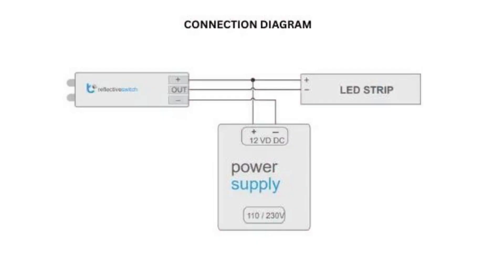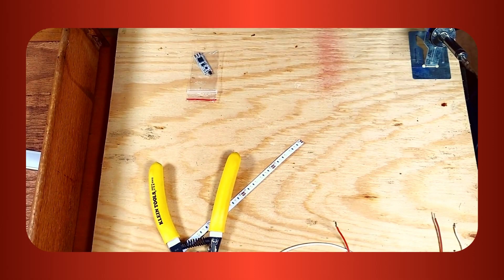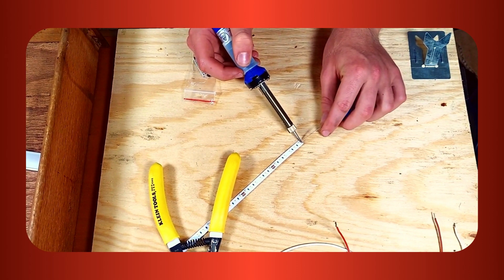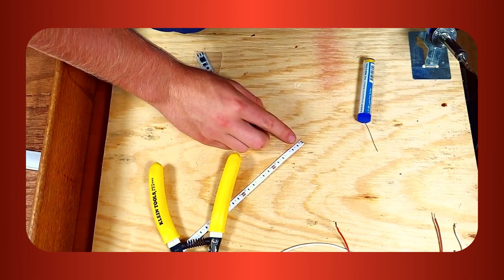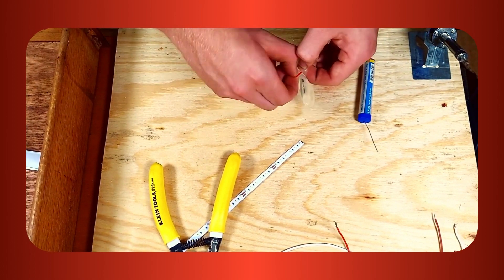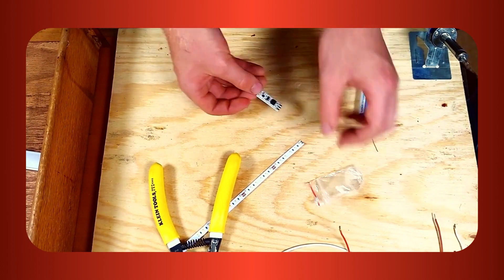it's time to solder. We're going to be connecting our strip, sensor, and power supply just as shown in this diagram. Let's begin by adding some solder to the pads on the LED strip and then onto the sensor. I'm going to add slightly more solder than usual to the positive pad on the LED strip just because we'll be connecting two wires to it.